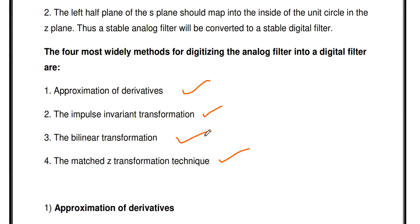This is also a two-mark question: what are all the methods used to design the digital IIR filter? The answer is: approximation of derivative, impulse invariant transformation, bilinear transformation, and matched Z-transform technique.